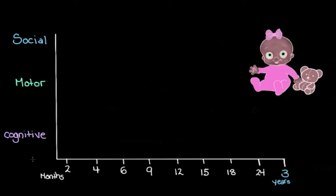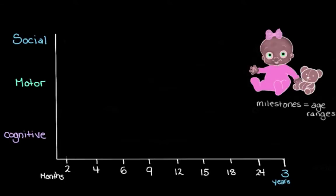We normally think about these milestones as age ranges rather than specific ages, because everyone develops at a slightly different pace. The normal time for a certain milestone is a range to account for these totally normal differences between people. For example, somewhere between about one and a half months and three months is when we'd expect a baby to start smiling in response to something — like if mom smiles, that makes the baby smile. We put smiling in our social category because it's an early indication that the baby is developing social skills, learning to respond to others and show how she feels.